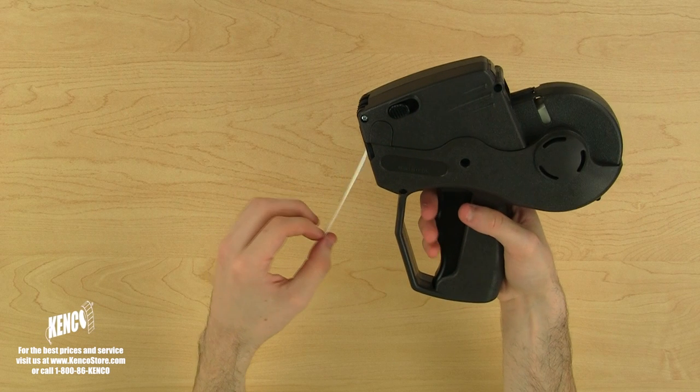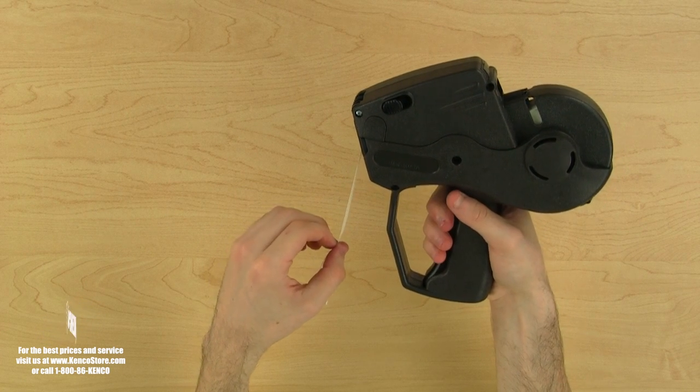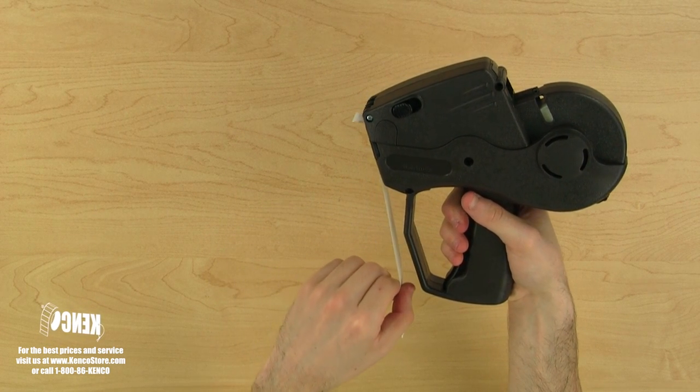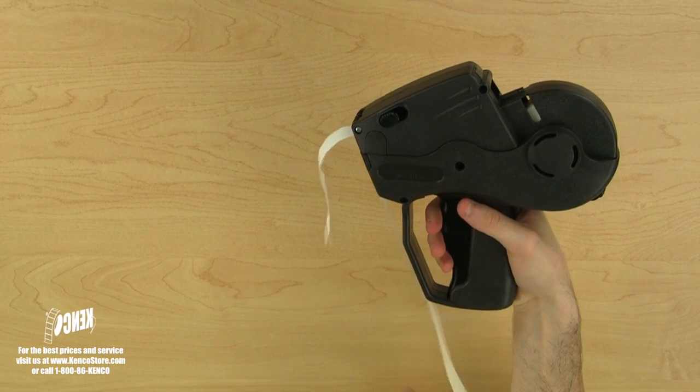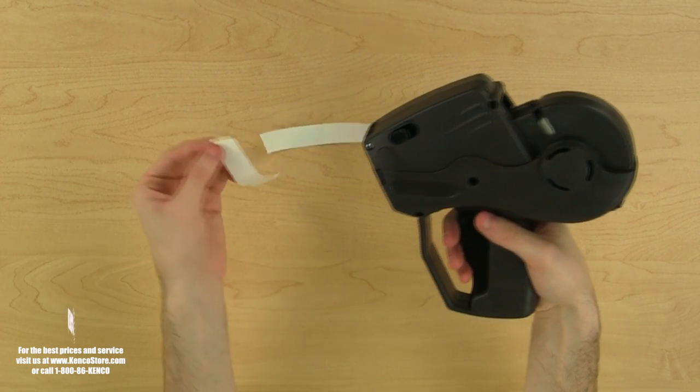Now we'll need to remove a few labels from the liner before we feed the labels into the advancing mechanism. A quick and easy way to do this is to squeeze the trigger halfway and pull the label strip down until you've separated about five or six labels.